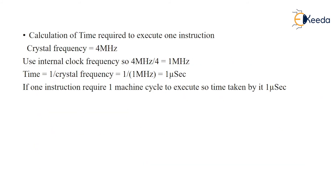For the calculation of time required to execute one instruction, the datasheet gives crystal frequency values over a range — for example, in PIC10, it is 4 to 10 megahertz depending on the version. Here I have taken an example of 4 MHz crystal frequency. In one instruction cycle there are four steps, so 4 MHz divided by 4 gives 1 MHz. Using the relation time = 1 / frequency, this gives 1 microsecond. So for one machine cycle it takes 1 microsecond.